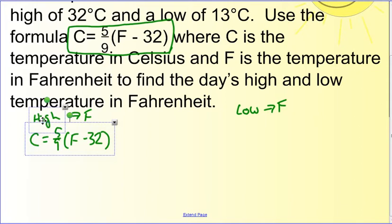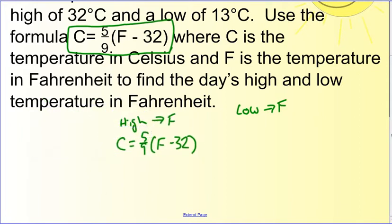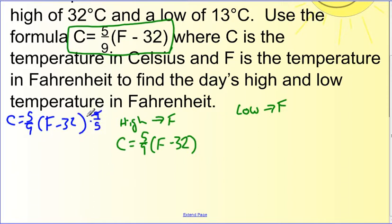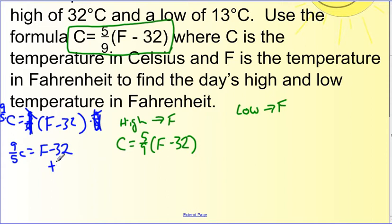To get rid of the five-ninths fraction, multiply both sides by the reciprocal — nine-fifths. Numerator and denominator cancel on both sides, giving nine-fifths C equals F minus 32. Then add 32 to both sides: these cancel, and we get F equals nine-fifths C plus 32.